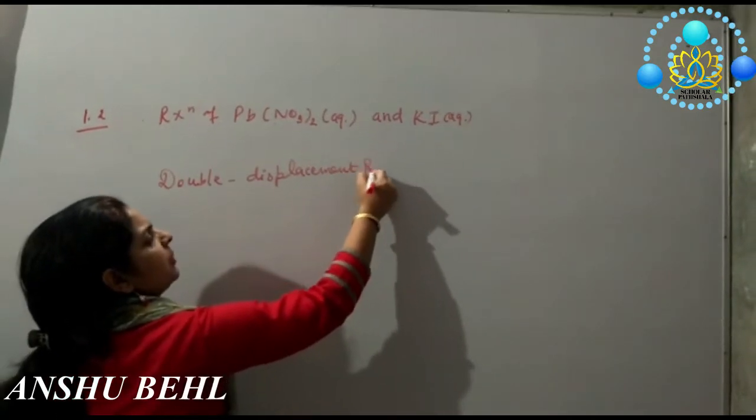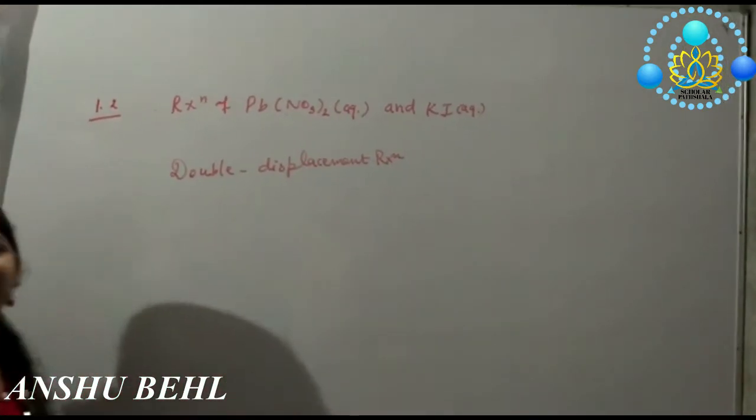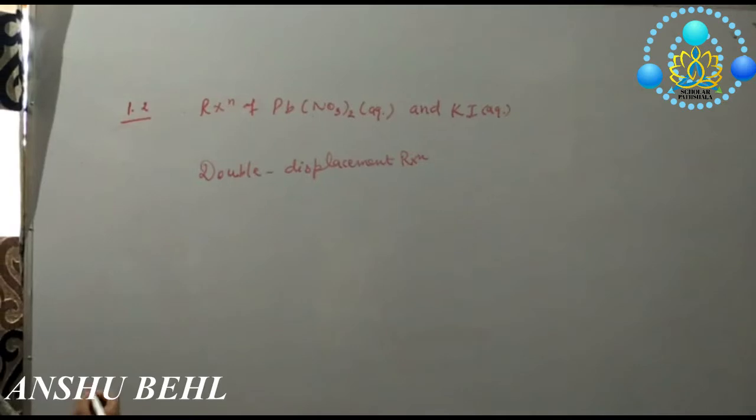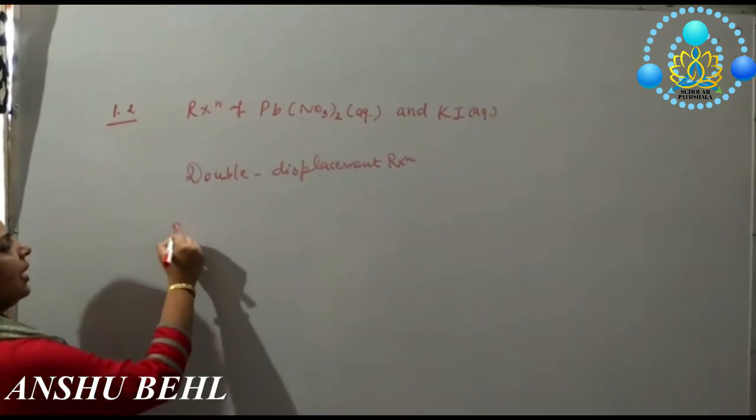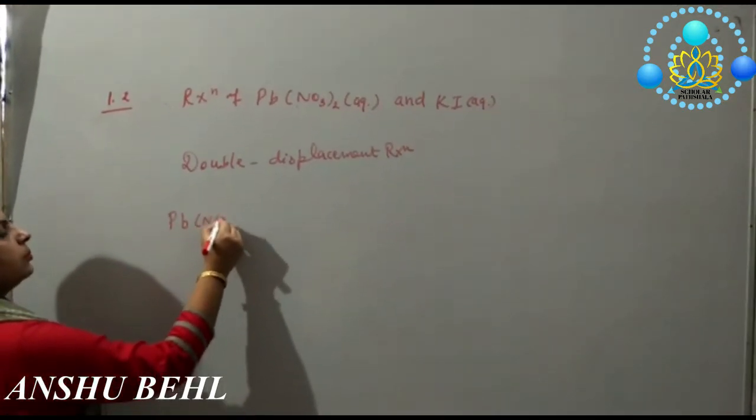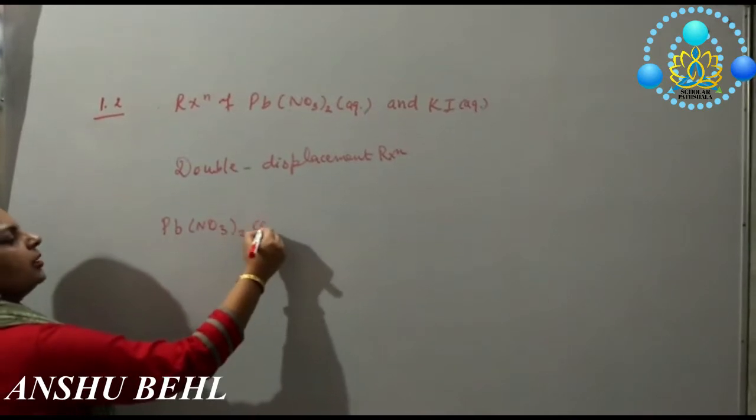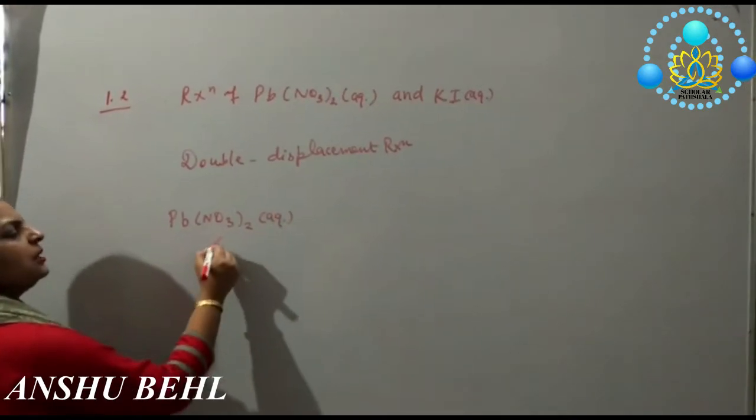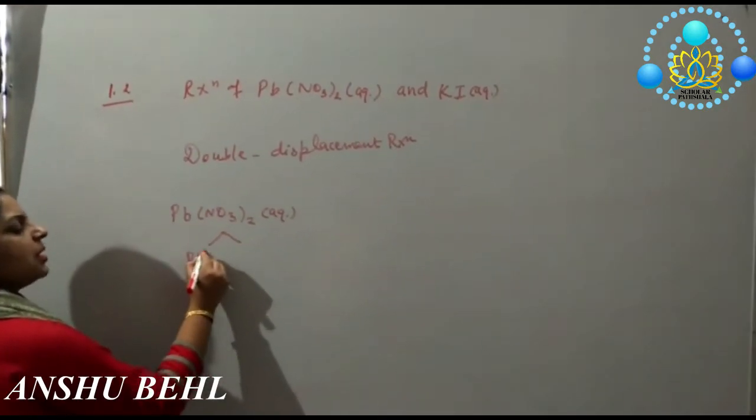Double displacement means both cation and anion exchange. Here you are taking lead nitrate, which is dissolved in water. Dissolved in water means it will break up to form its ions.